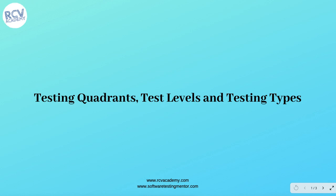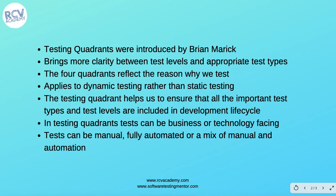In this ISTQB agile tester certification tutorial, we are going to talk about agile testing quadrants, test levels, and testing types. Testing quadrants were introduced by Brian Merrick, and they bring more clarity between test levels and the appropriate test types done between those levels. As seen in previous tutorials, there are four main test levels: unit, integration, system, and acceptance.